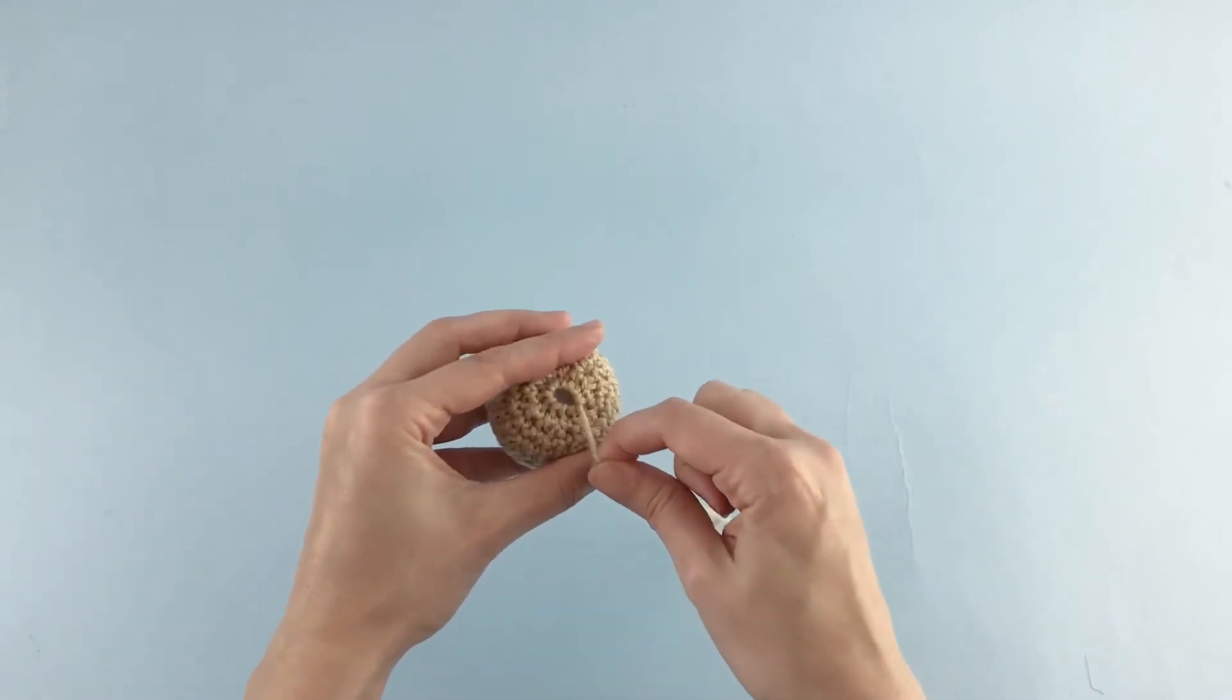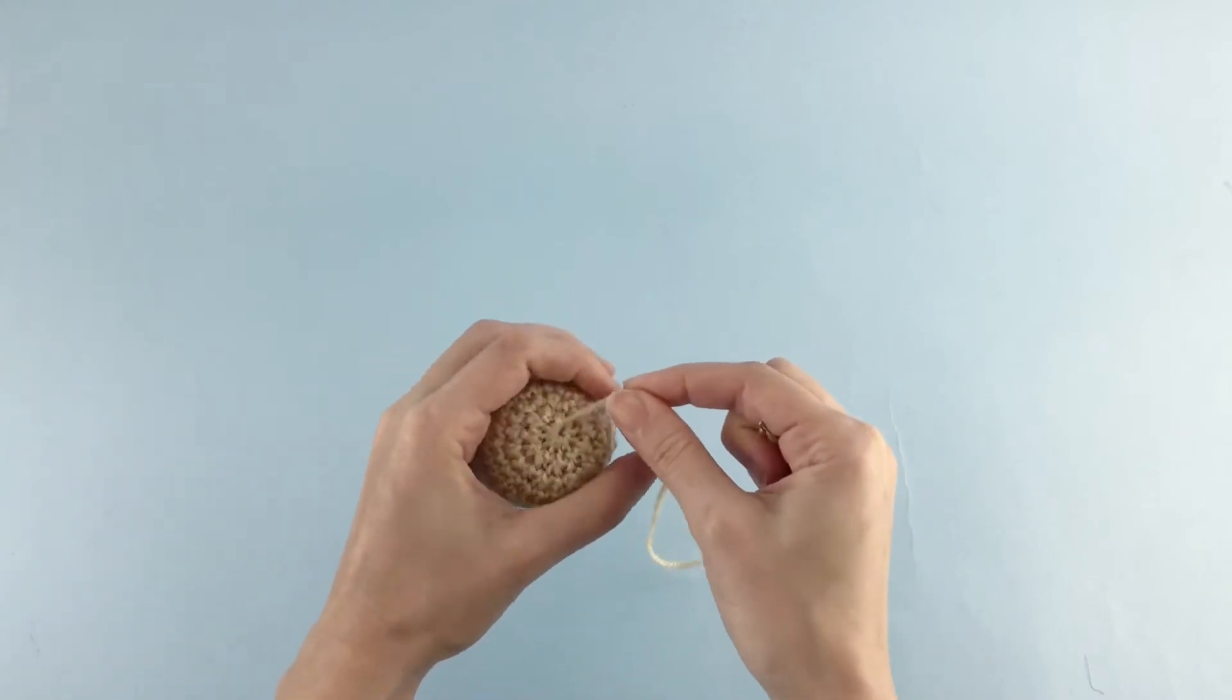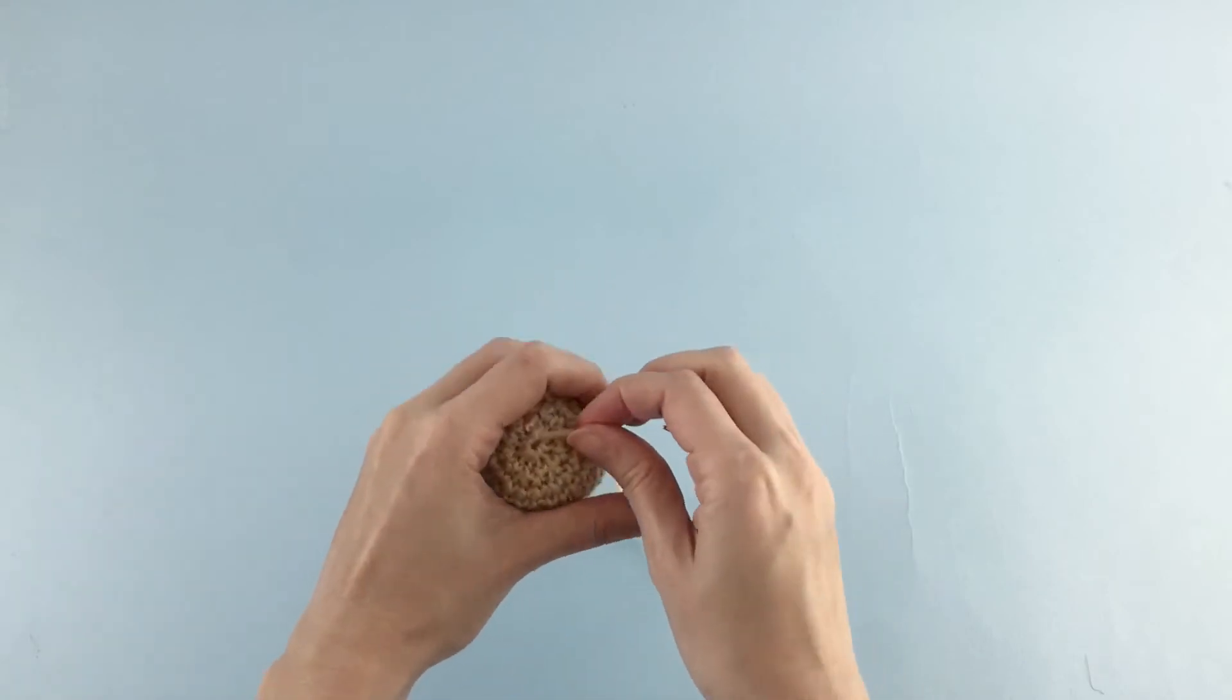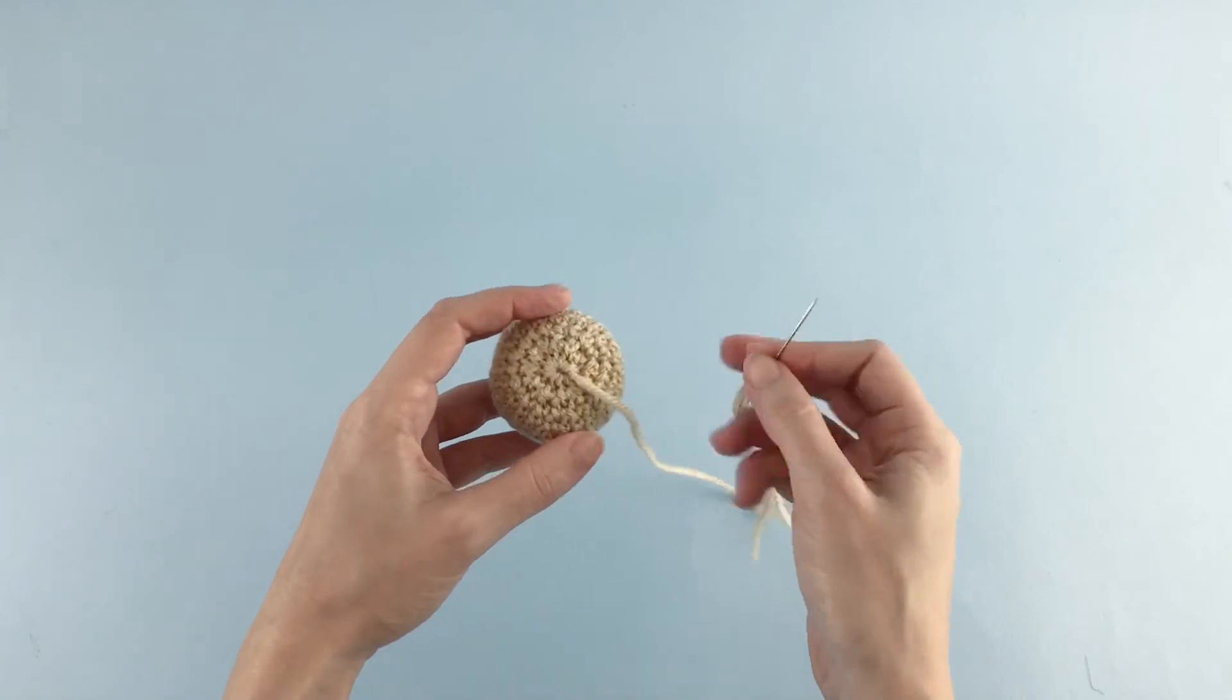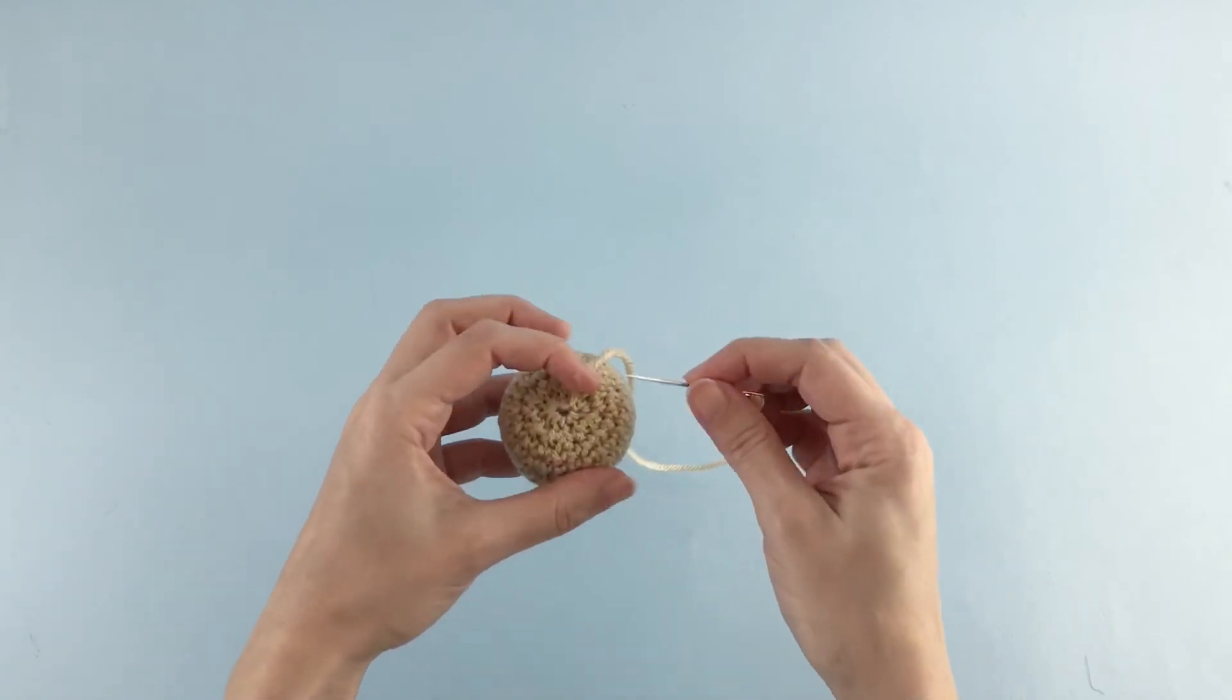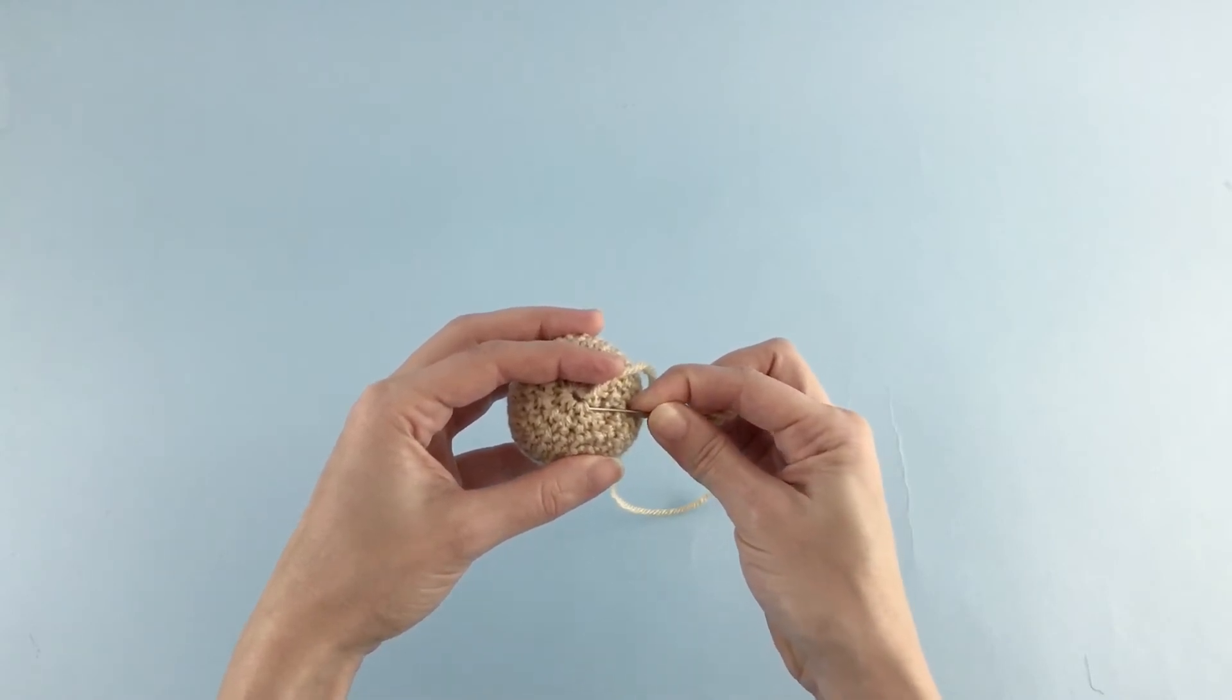Pull it very tight and you see you already close your crochet. Okay, so now to make it nicer what we are going to do is insert the sewing needle taking two by two stitches. But this time you can take the whole stitch.